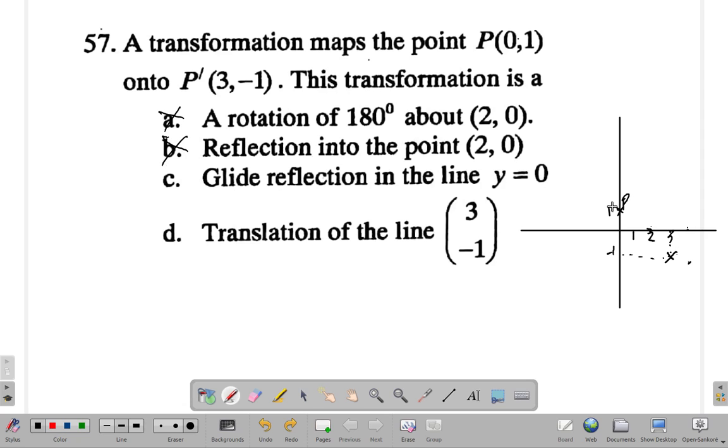Option C: glide reflection in the line y=0. All right, y=0 is the x-axis. If you glide it to 3, then reflect over... well, it's possible. If you reflect over the x-axis, it would have been 1 above the x-axis and then end up as 1 below the x-axis. That's a possibility.